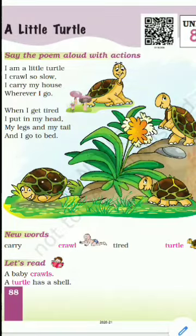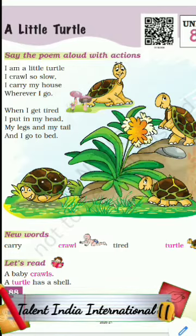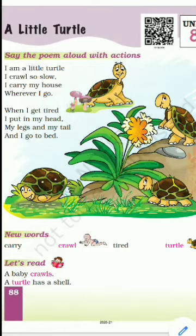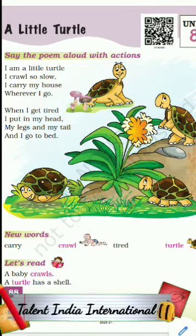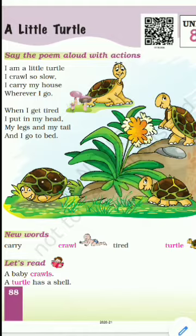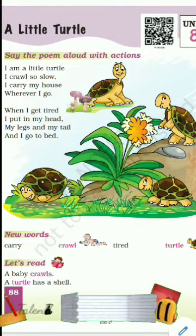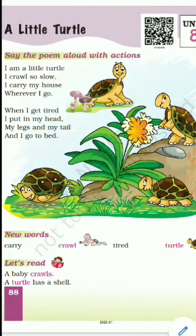Summary of the poem. So children, this poem is about a little turtle. He moves very slow. He carries his home — that is his bag, which is a shell — wherever he goes. When he gets tired, he uses his shell as a bed and sleeps inside it.